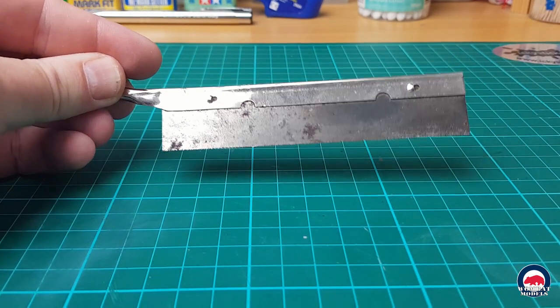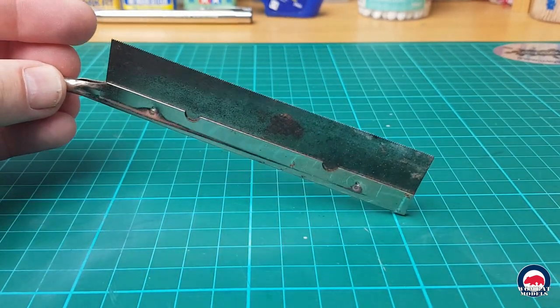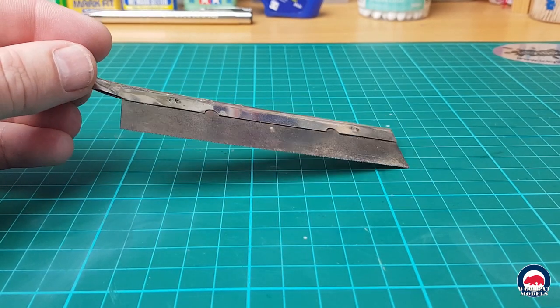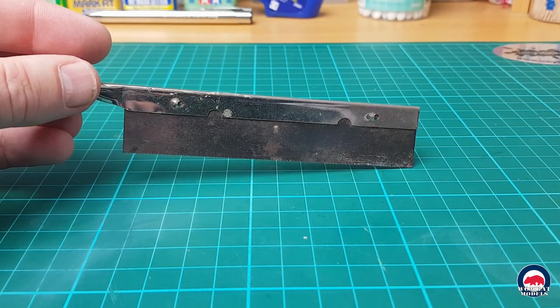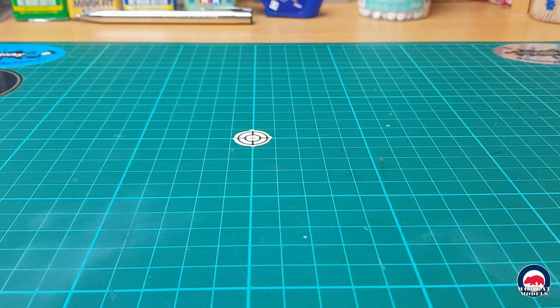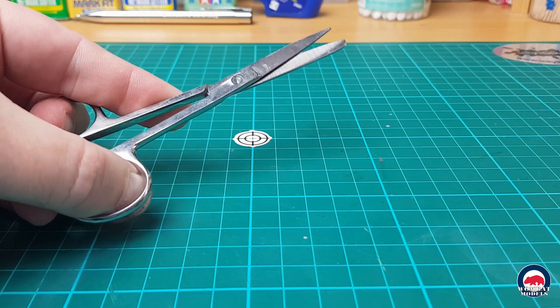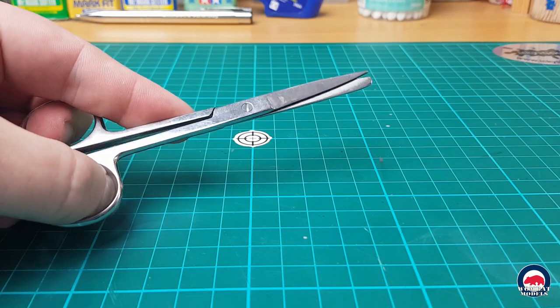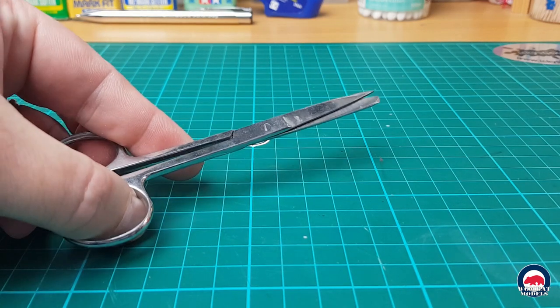Then we have our ubiquitous razor saw. Can't do without that for cutting off large chunks of plastic, or when you're doing resin, cutting off the pore blocks. A pair of scissors, so these are used for cutting decal sheets, cutting out the individual decals and markings.